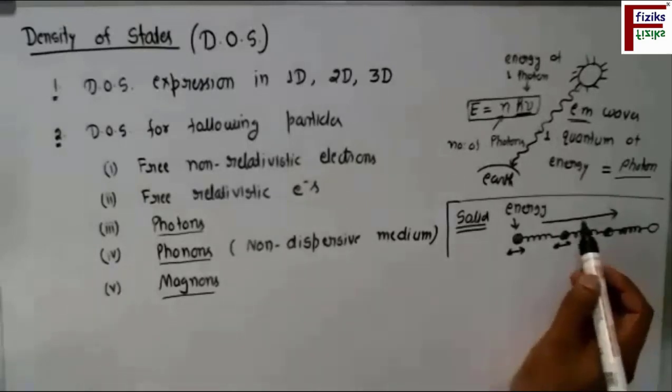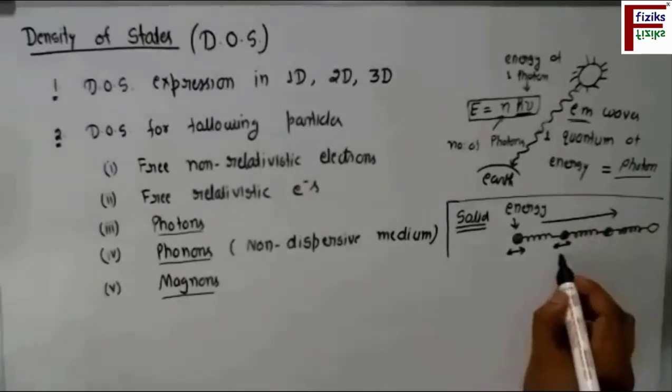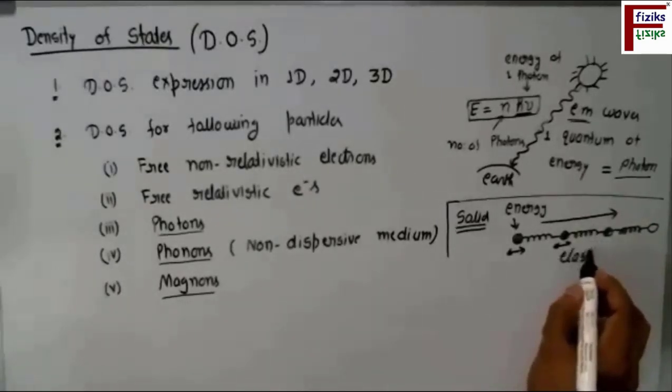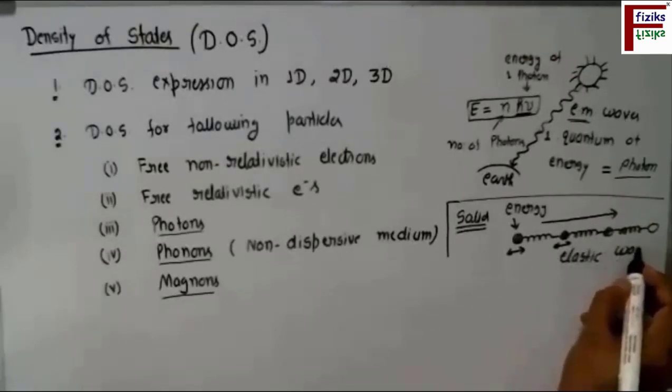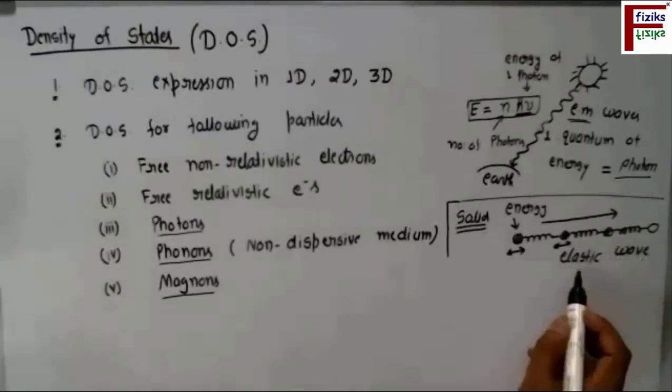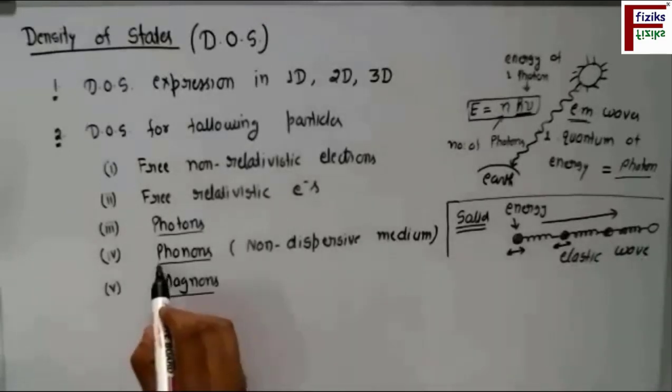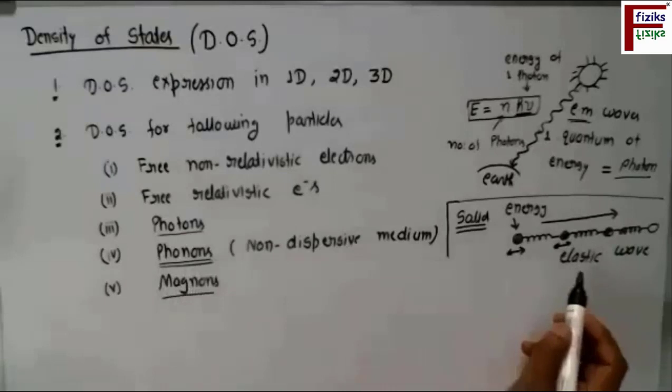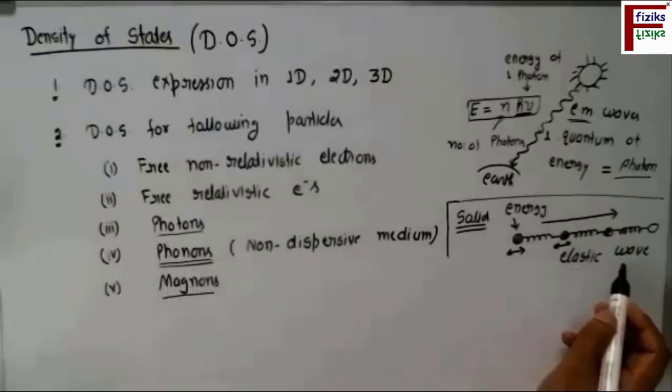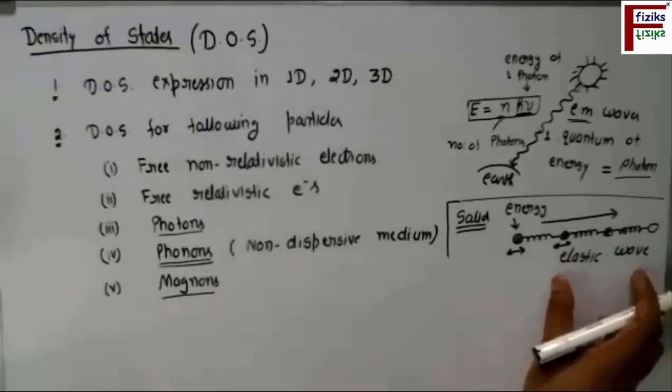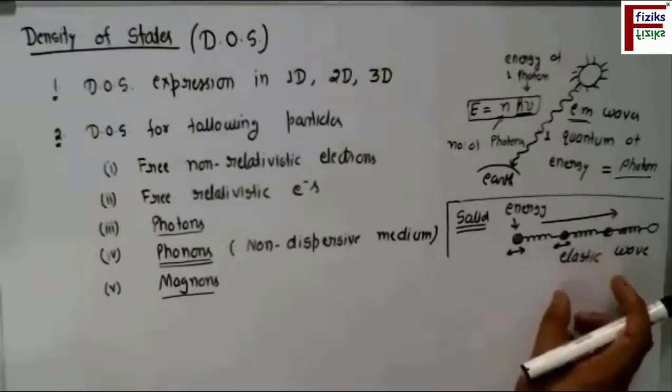So there is a wave produced here, and this wave is what is known as the elastic wave. And the quanta of this energy is what is known as the phonons. So phonon is nothing but the quanta of the elastic wave. Elastic wave is the wave produced inside the solid because of the atomic oscillations.